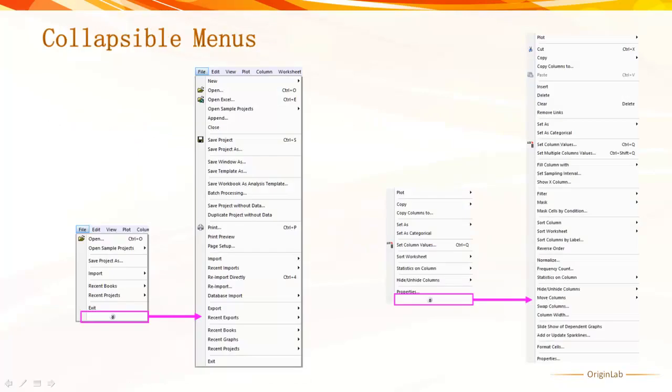Since new features are added to Origin with every version, some menus and context menus have become very long, making it difficult to find features at a glance. We therefore introduced collapsible menus that only show the commonly used options by default. Newly used menus will be added to the collapsible menu list.